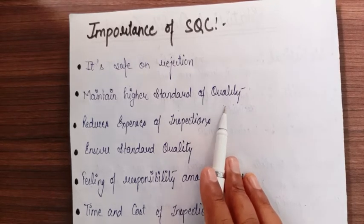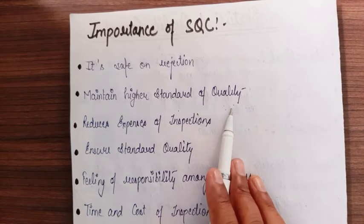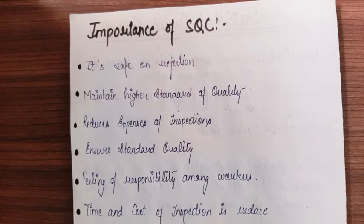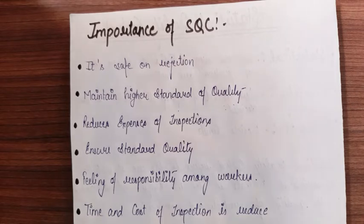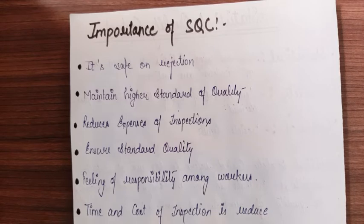In SQC, we do not compromise in the market where we have goodwill to maintain. If you have goodwill, your brand value must be protected. For example, in branded clothing you don't expect any defects — because any organization with brand value and goodwill does not want to spoil it. So in SQC, you either convert your product to higher standard quality or you reject it to protect that goodwill.